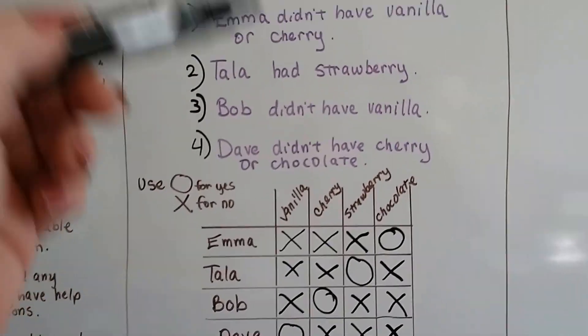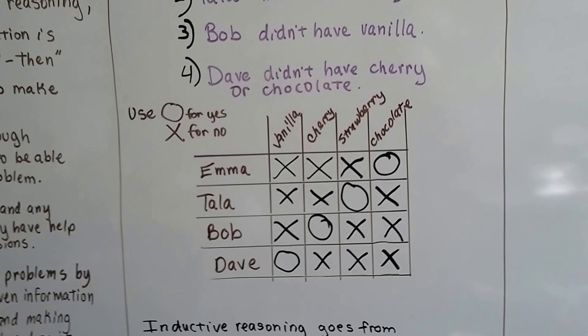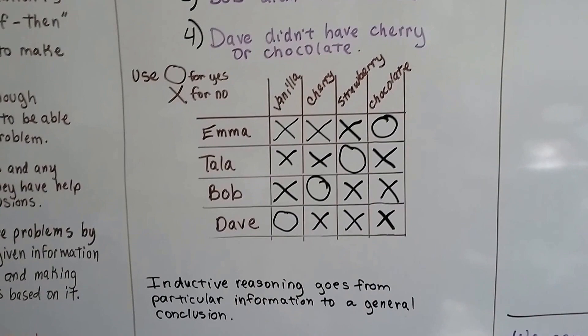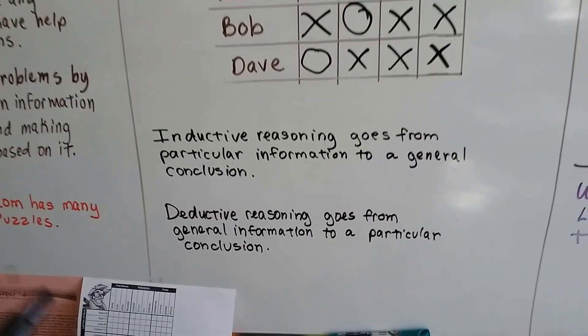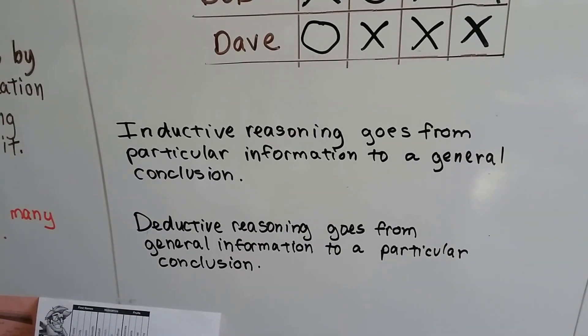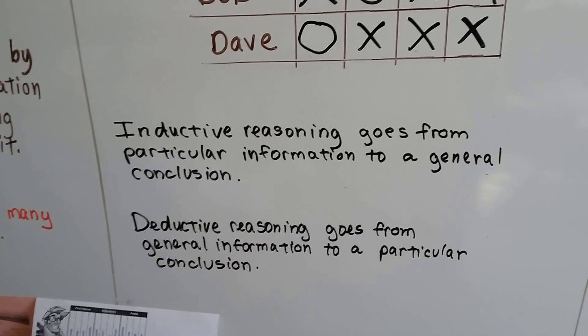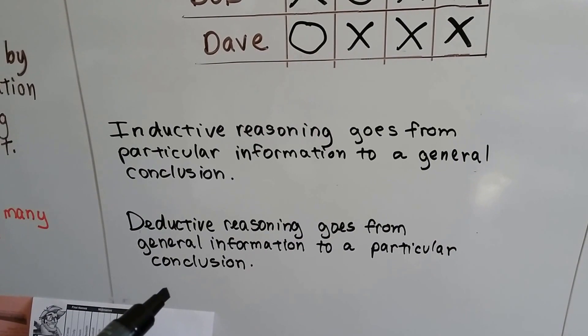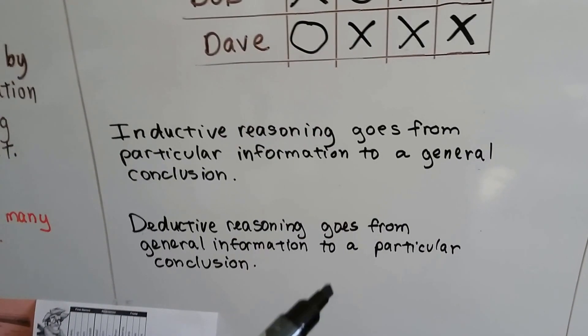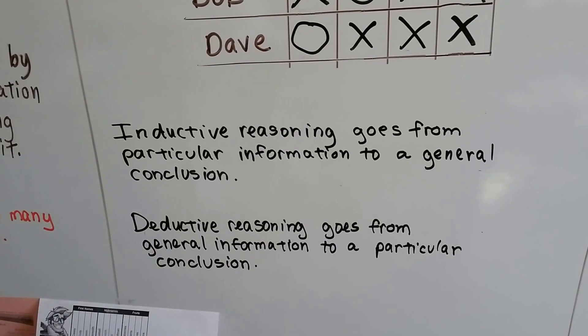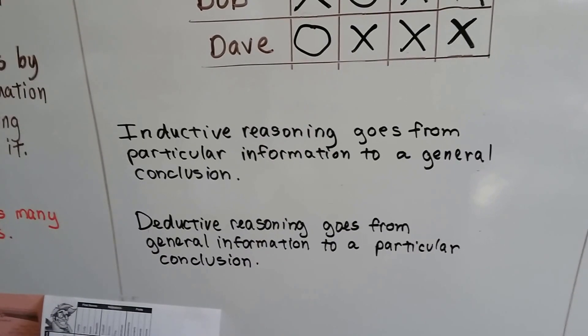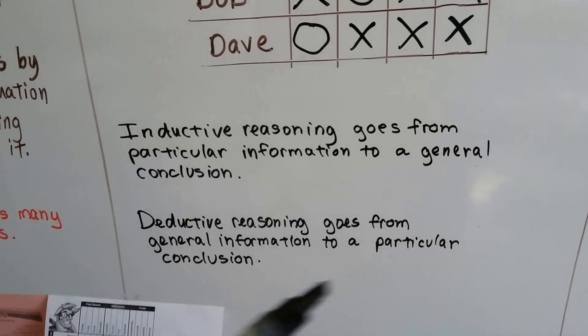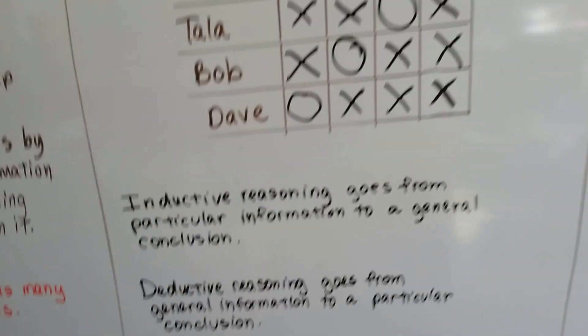That's a logic puzzle. And we used logical reasoning to figure this out. If Emma had chocolate, then Bob didn't. It's an if-then. So as we said in the last couple of videos, inductive reasoning goes from a particular bit of information to a general conclusion, and deductive reasoning goes from general information to a particular conclusion. It's like they're flipped. It's like they're the flipped version of each other. It goes from particular to general. It goes from general to particular.